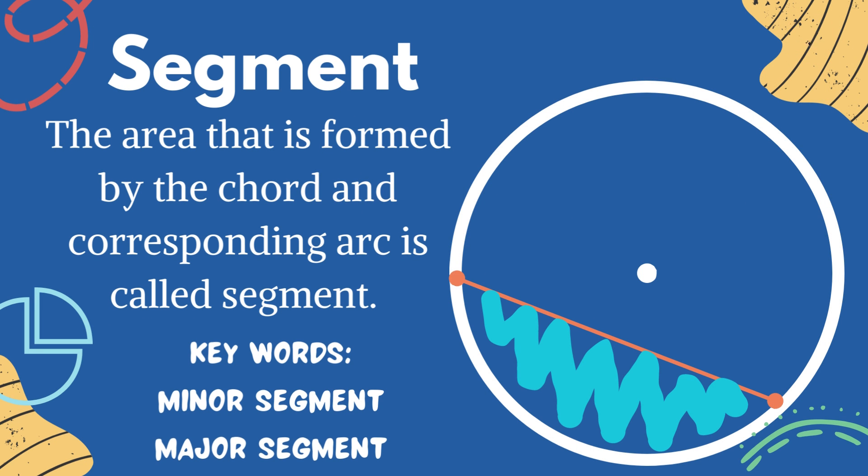Segment. The area that is formed by the chord and the corresponding arc is called segment. If segment is less than semicircle, it is known as minor segment. But if it is greater than semicircle, it will be known as major segment.